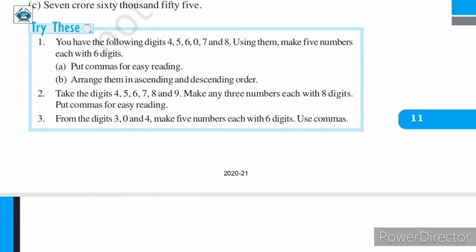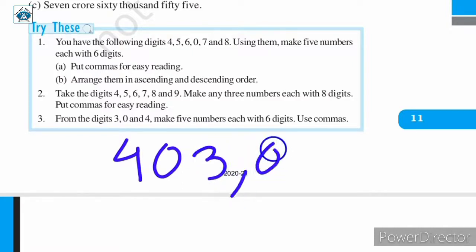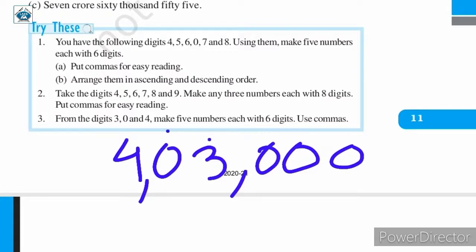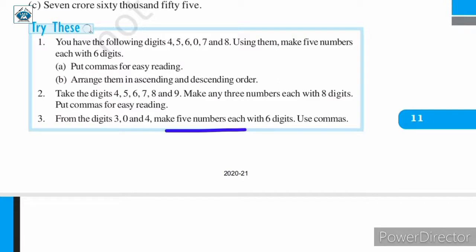Next, you can make another number of this form: four, zero, three, zero, zero, zero — again a six-digit number. Zeroes can go in the ten-thousands place, thousands place, hundreds, tens, or ones place, but zero should not be in the lakh place since we are making a six-digit number. You need to make five numbers each with six digits using the digits three, zero, and four.